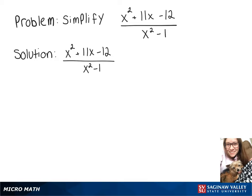We want to simplify the expression x squared plus 11x minus 12 over x squared minus 1. So we'll have to factor the top and factor the bottom.